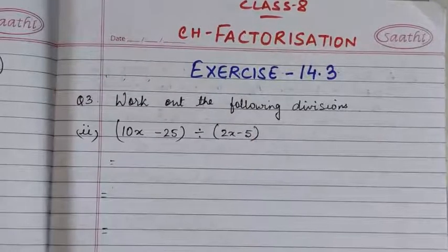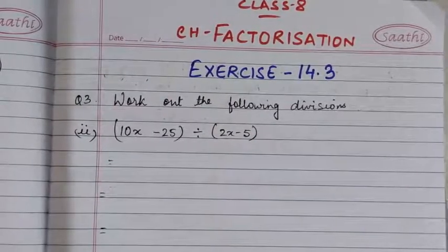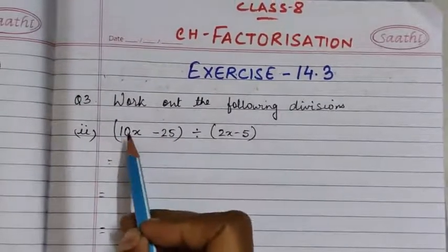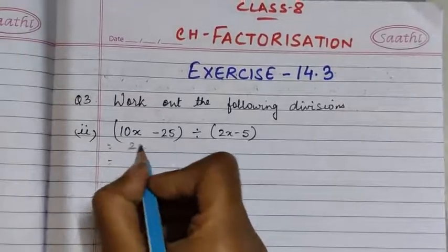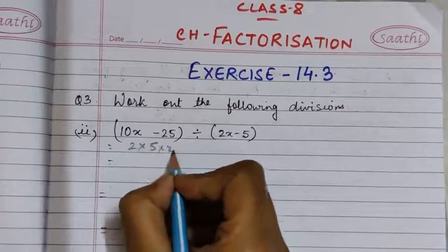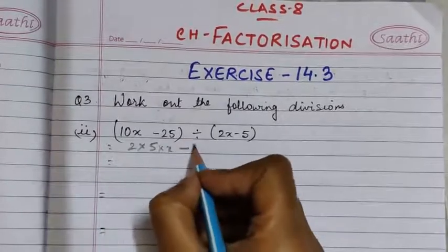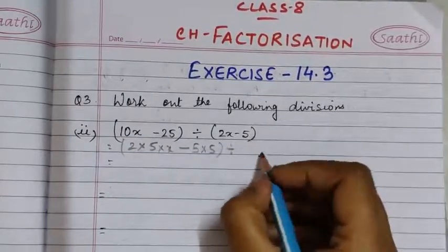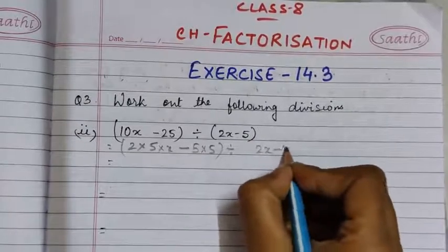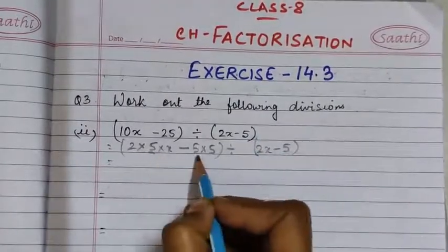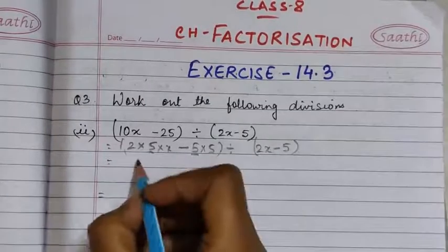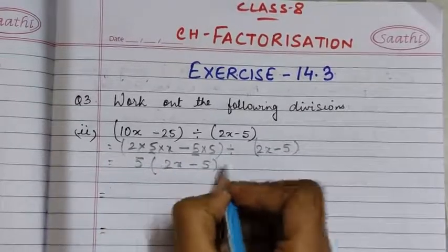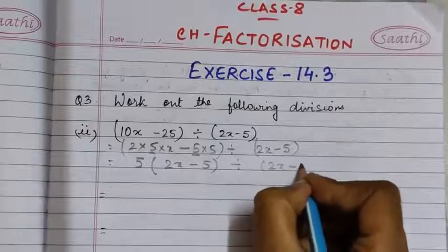First of all, let us see if there are any common factors between the terms. Now here we are having 10, which can be written as 2 into 5. And 25 can be written as 5 into 5, divided by 2x minus 5. Here you see 5 is common, so we are going to take the common term out. So it will be 5, and we are left with 2x minus 5 divided by 2x minus 5.